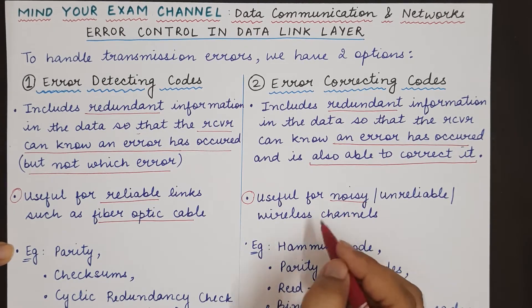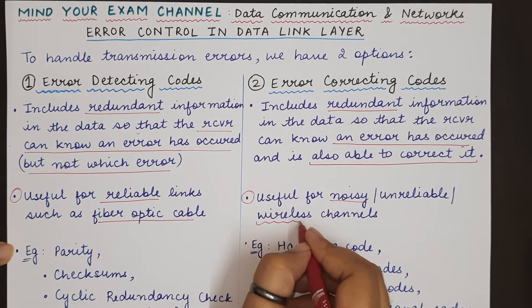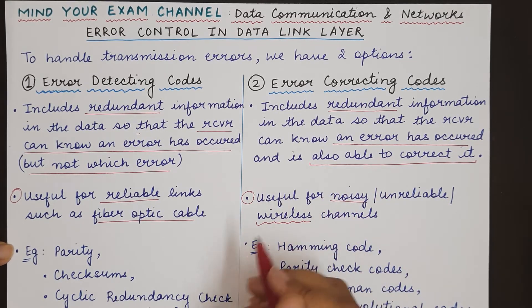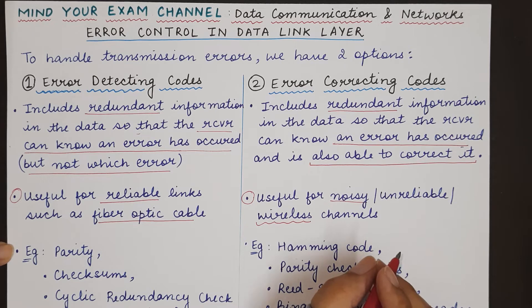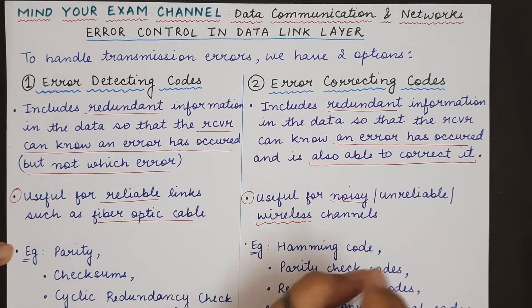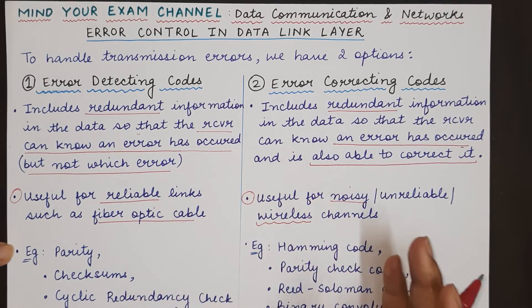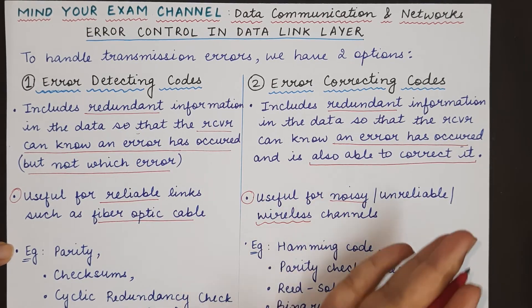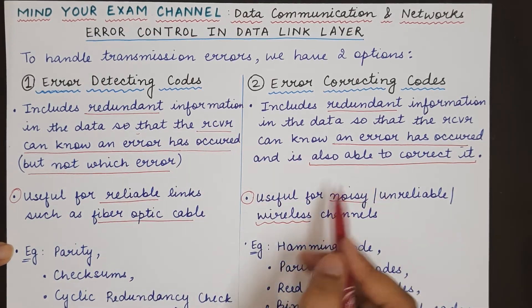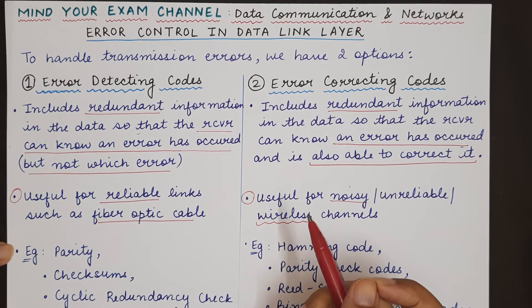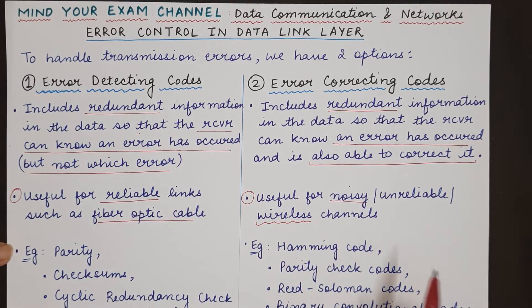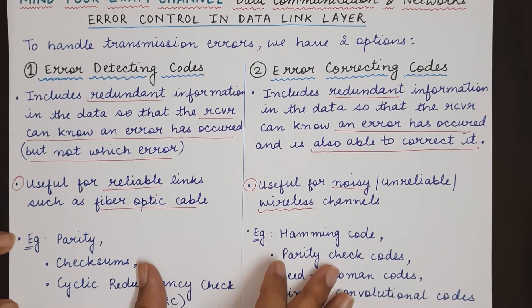Error correcting codes are useful in the case of noisy or unreliable channels such as wireless links. If the channel is noisy and many errors occur often, the receiver should have the capability to detect and correct the errors rather than constantly asking the sender to resend. If errors are occurring frequently, the receiver should have the capability to correct those errors once detected.